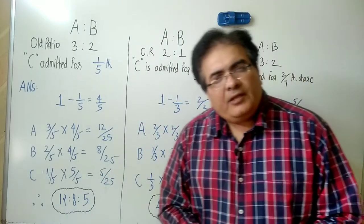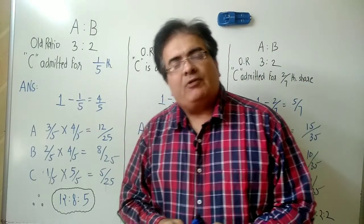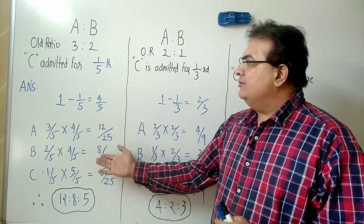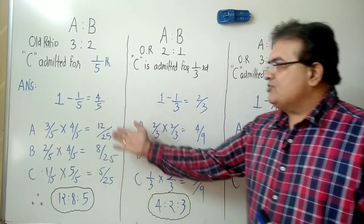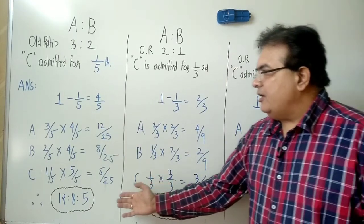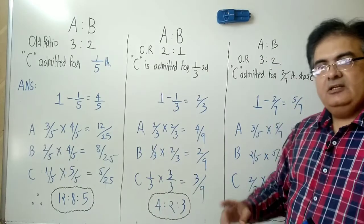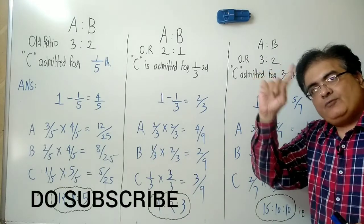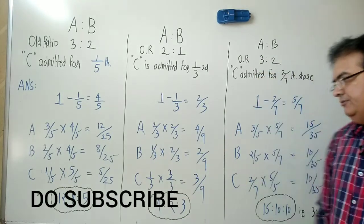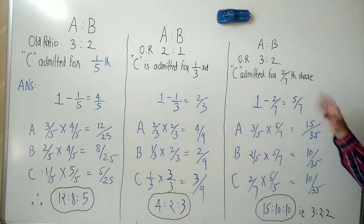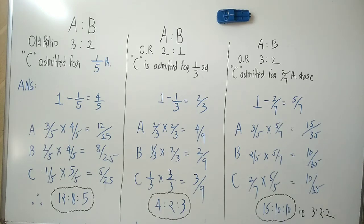Now solving the same questions with the normal traditional style — you are very much aware of this. Just check: the answer is 12:8:5 in the first case. Compare all answers obtained with our fast shortcut method — first, second, third — please have a look. This is the traditional normal style of solving.